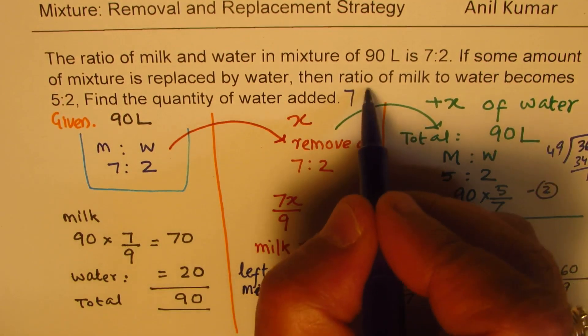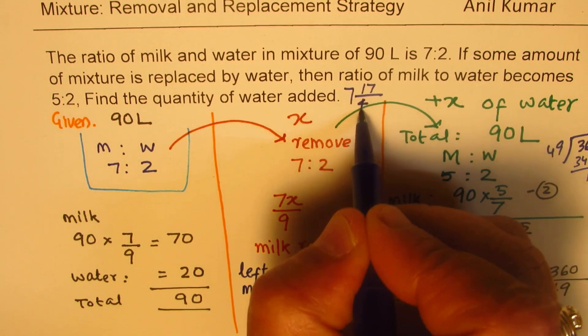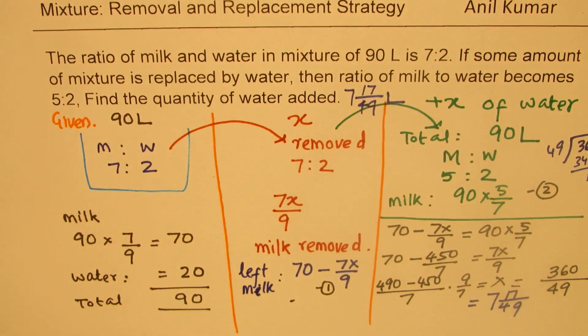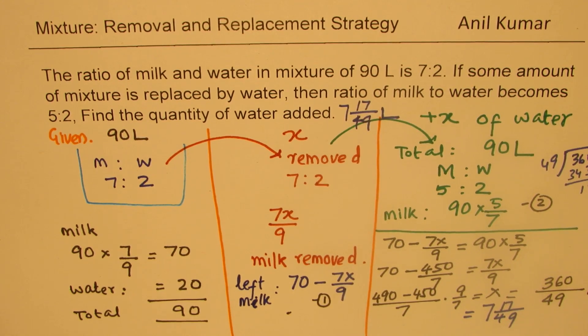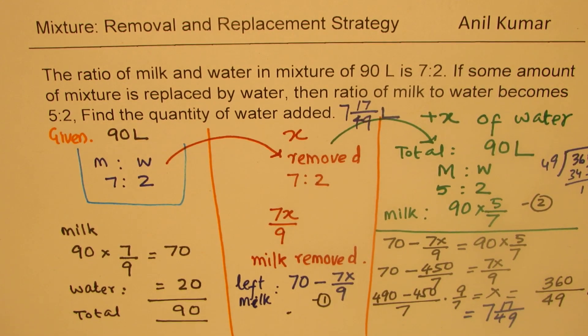7 whole, 17 over 49 liters was removed. Is that clear to you? So that is how this question could be solved. That is an excellent example.